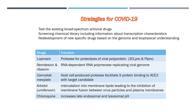Human receptors are angiotensin-converting enzyme 2 and dipeptidyl peptidase 4. The predominant mode of action of Arbidol is based on its intercalation into membrane lipids, leading to the inhibition of membrane fusion between virus particles and plasma membranes, and between virus particles and the membranes of endosomes. Chloroquine increases late endosomal and lysosomal pH, resulting in impaired release of the virus from the endosome or lysosome, as release of the virus requires a low pH. The virus is therefore unable to release its genetic material into the cell and replicate.